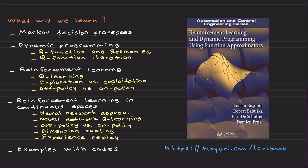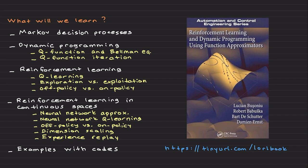In on-policy learning, you learn from what you are currently doing. For example, imagine throwing a ball — sometimes with your strong right hand, sometimes with your weaker left. In on-policy learning, you learn from whatever you do at the moment: if you throw with your right hand and make the basket, you learn that works; if you throw with your left hand and miss, you learn that doesn't work as well.